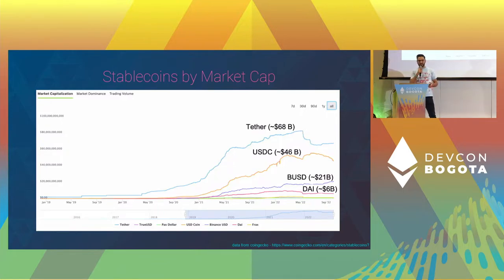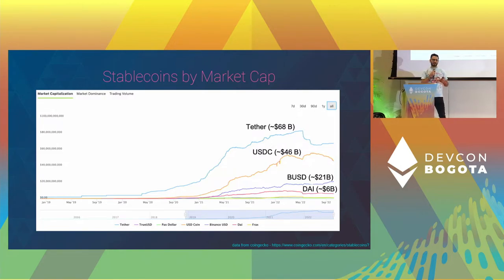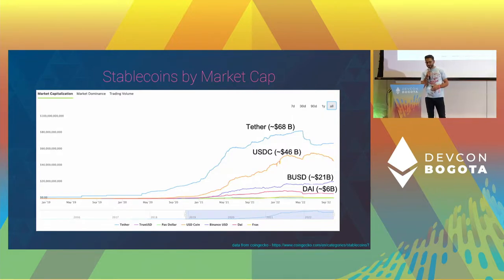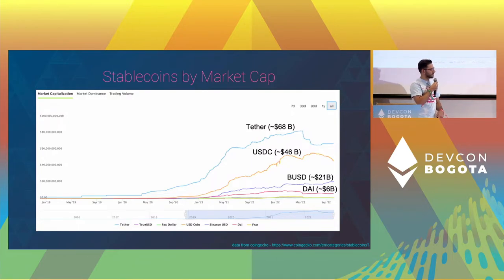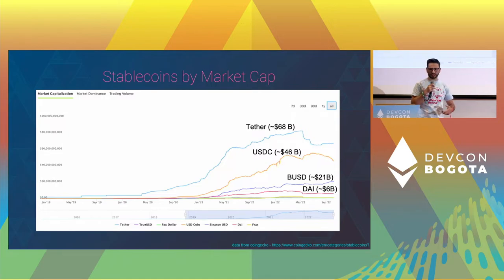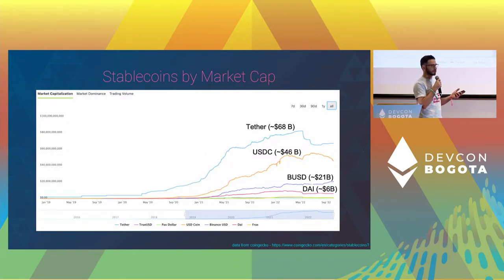There are also other stablecoins with much smaller market caps using new stability mechanisms, things like FRAX. These things are so different that even having them in the same category presents challenges. One notable asset not included here is UST — the stablecoin associated with the Terra project — which had approximately $18 billion in market cap at its peak. That has essentially disappeared, comprised of users not really double-clicking into what that stablecoin is, how it works, and what the risks are.